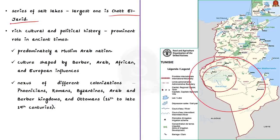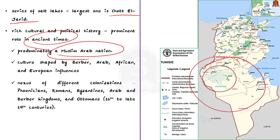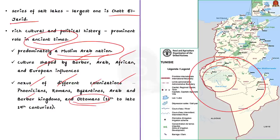Tunisia has a rich cultural and political history. Currently a predominantly Muslim Arab nation, its culture has been influenced by Berbers — the indigenous tribal community of North Africa — Arabs, Africans, and Europeans. This country has been ruled by Phoenicians, Romans, Byzantines, various Arab and Berber kingdoms, and even by the Ottomans from the 16th to 19th centuries.